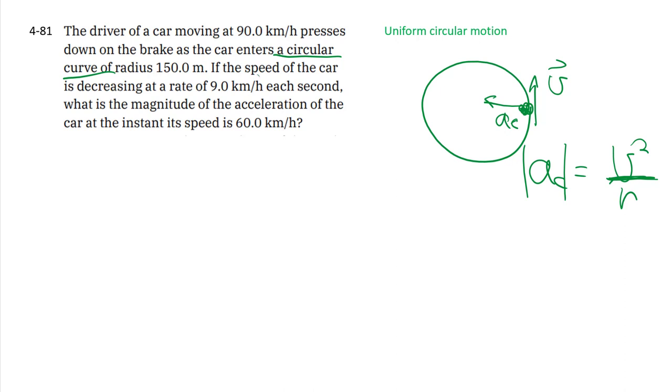But in this case, we're told that the speed of the car is decreasing, so we no longer have uniform circular motion. We have non-uniform circular motion.